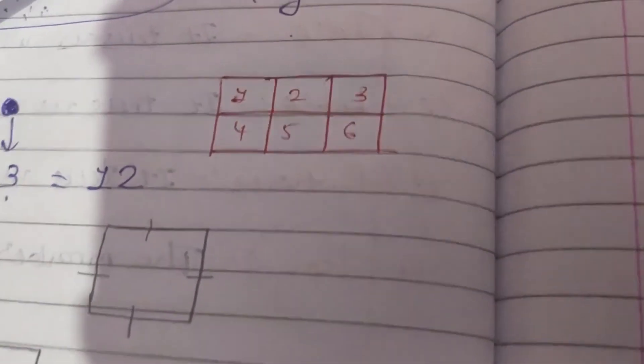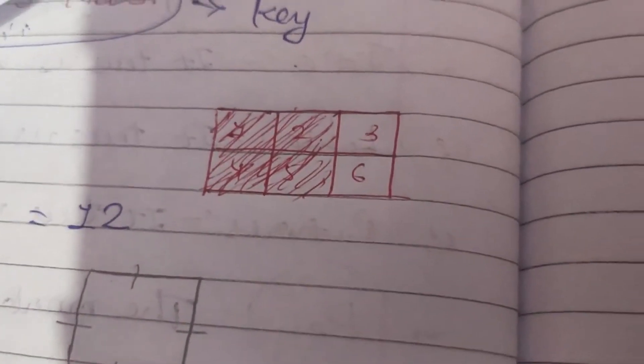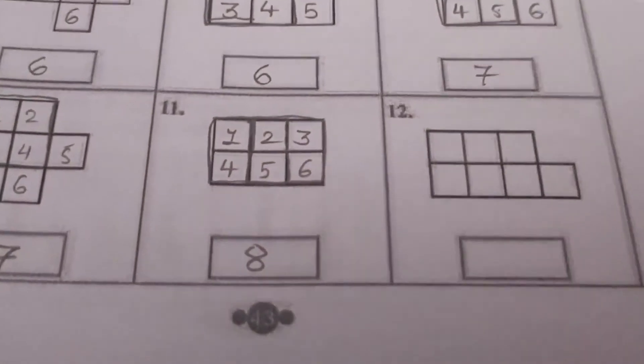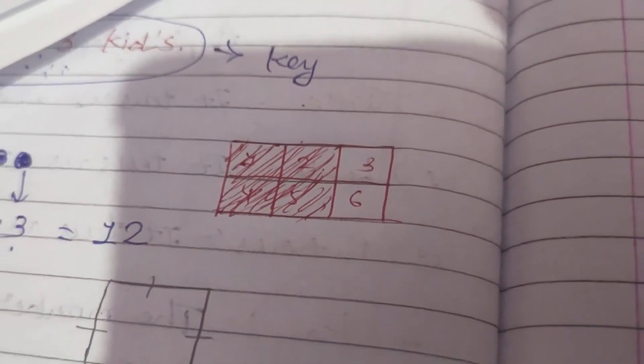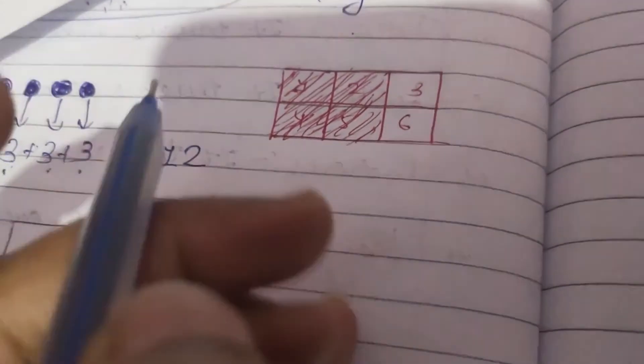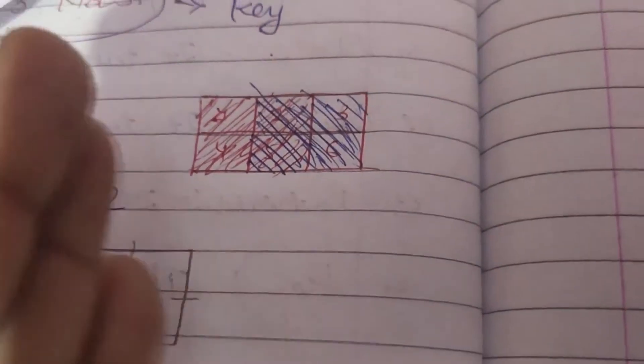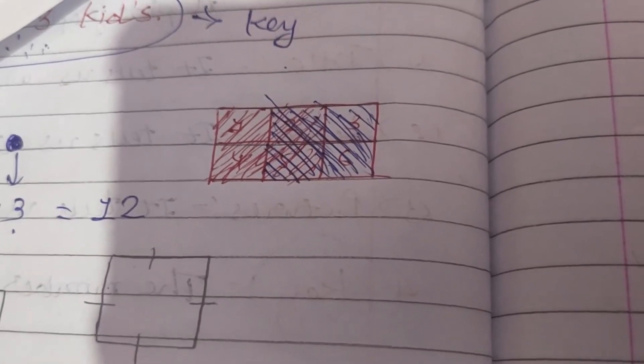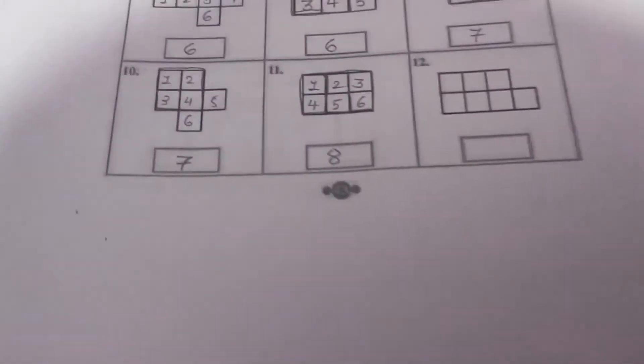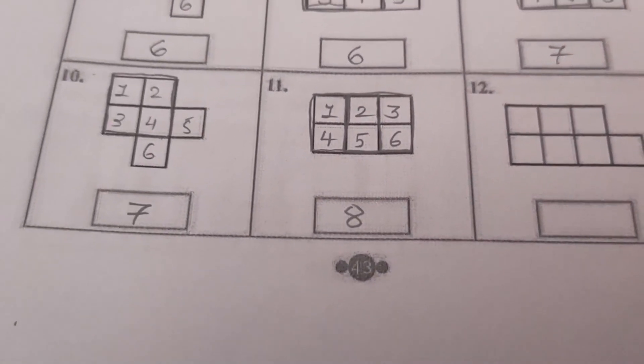But यहाँ पे दो और squares भी create हो रहे हैं। मैं यहाँ पे shaded parts करके आपको दिखा देता हूँ। यह shaded part मैंने red color का कर दिया है — तो यह जो है वो एक square यहाँ पे बन गया। तेना फ्र मैं blue color के अंदर दूसरा parts draw कर देता हूँ — इस तरह से यहाँ पे दो squares और create हो जाएंगे। तो इस तरह से यहाँ पे squares count करने हैं।